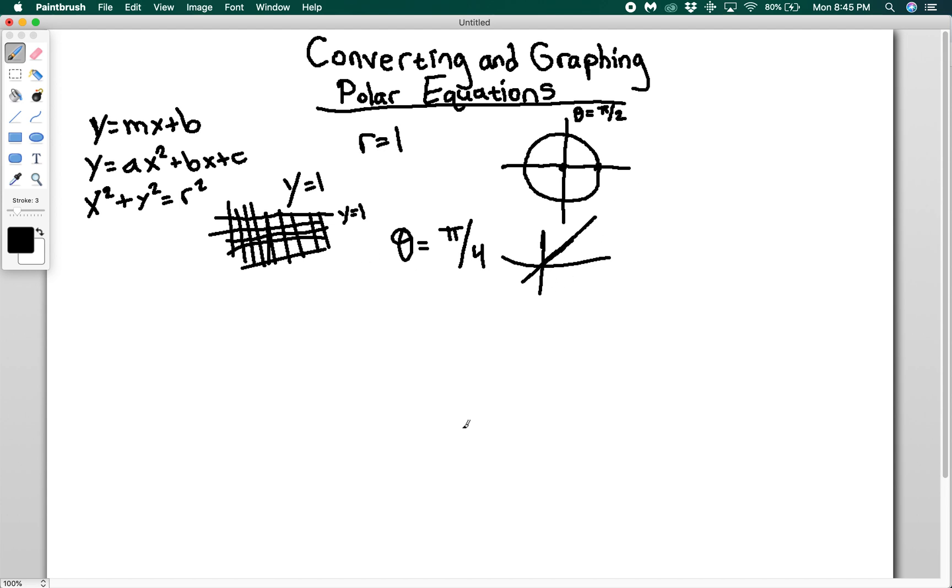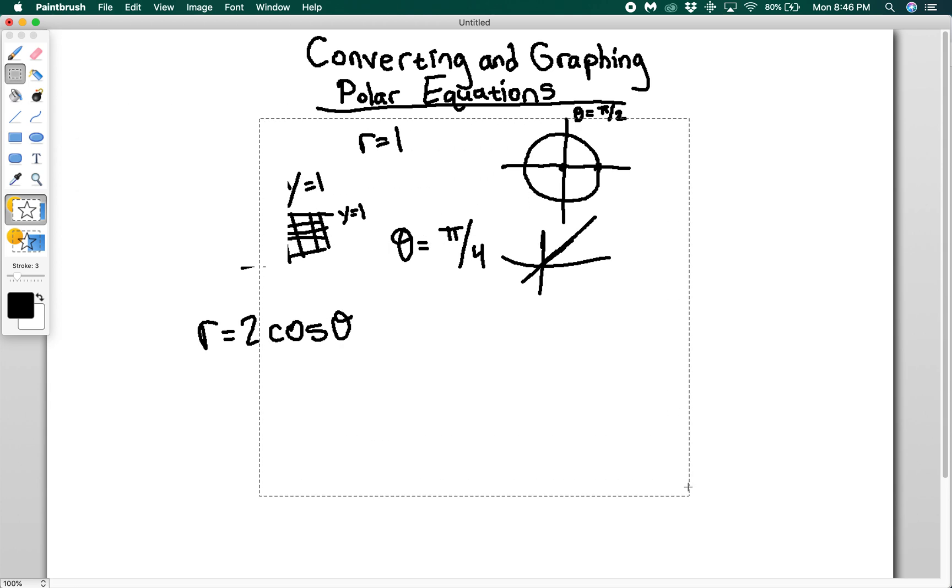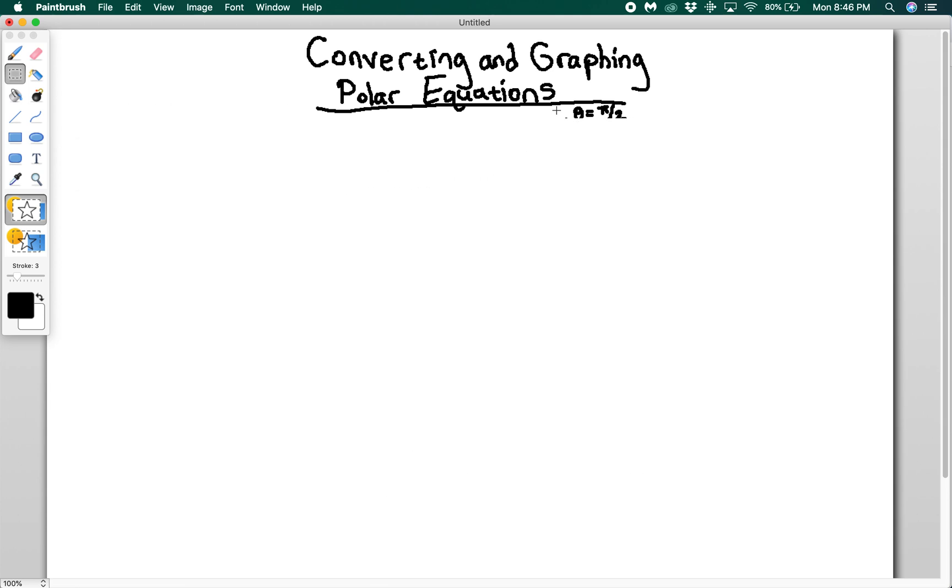If we take something a little bit more complicated such as r equals 2 cosine of theta, that's going to give us something a little bit different. We're going to get to more complex graphs in a bit, but for now if you want to plug that in, you might be surprised. For now we're going to talk about how to convert back and forth between Cartesian and polar coordinates.